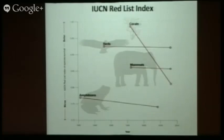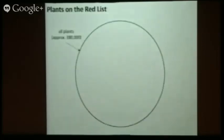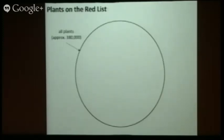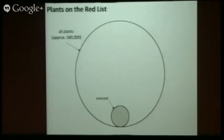You'll note the conspicuous absence of plants, and that was the main reason why we tackled plants. But why aren't plants there? This is a complex diagram to explain the situation. The big circle represents all of plants — about 380,000 species as far as we know. The grey circle represents the number on the IUCN red list itself — about 15,000 — which represents less than 5%. So there's the problem.